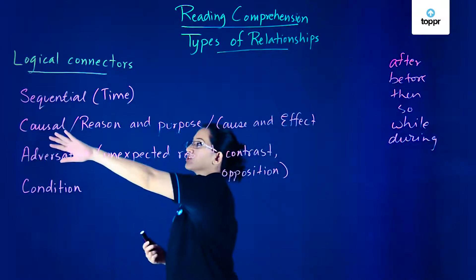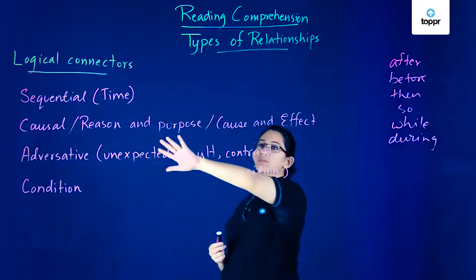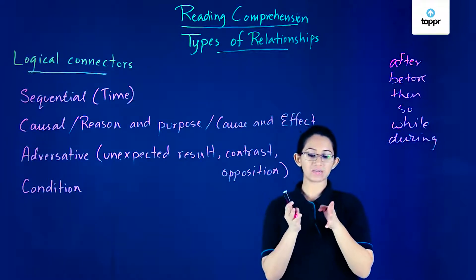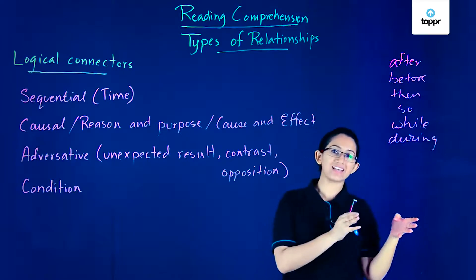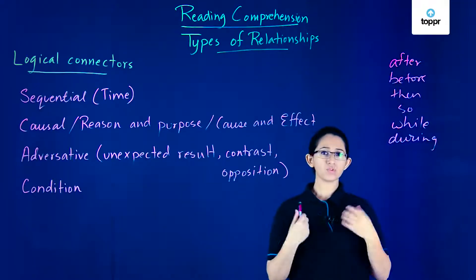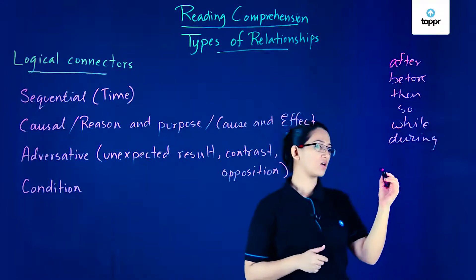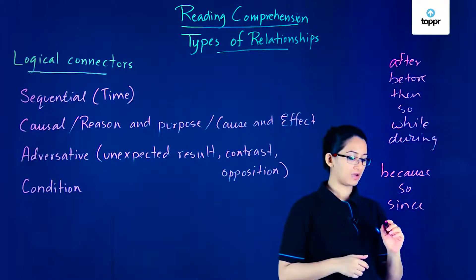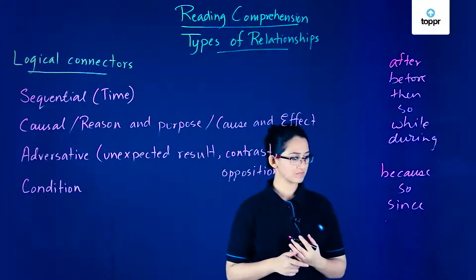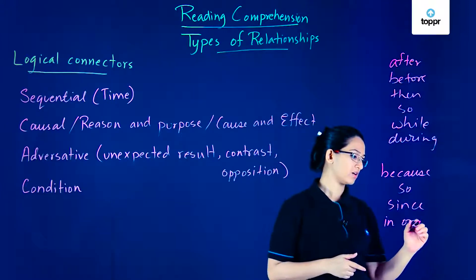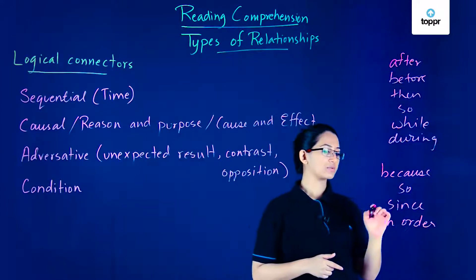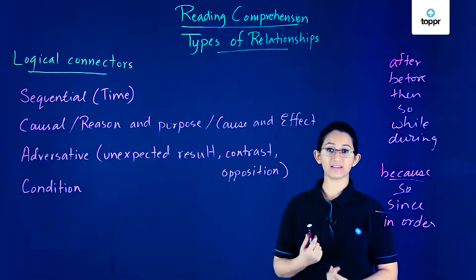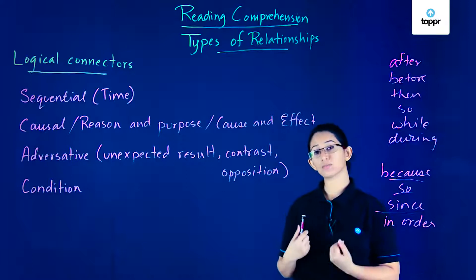Similarly, we have another type of logical connector which is the causal or reason and purpose or cause and effect relationship. This means that one thing or one statement is the cause or reason for something else happening. Types of words that can show you causal relationships are words like because, so, since, in order that, or provided that. All of these types of words can give you an idea that you're showing a reason and purpose or a cause and effect relationship between two parts of the sentence or between two sentences.